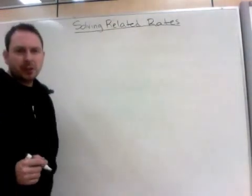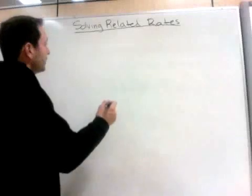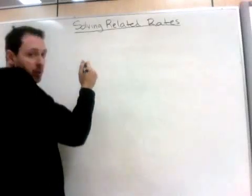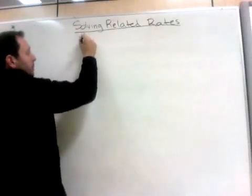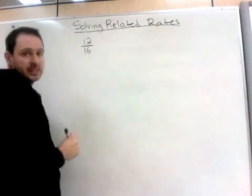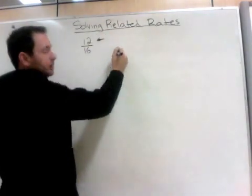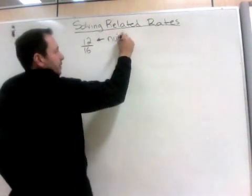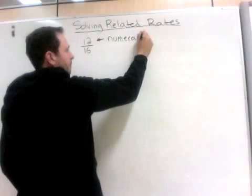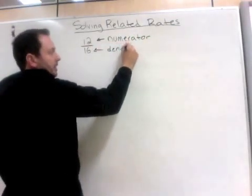So first we need to do a little review. We're going to look at reducing fractions or simplifying fractions. When we have a fraction, for example, we may start with the number 12 over 16. The top is referred to as the numerator, and the bottom is referred to as the denominator.